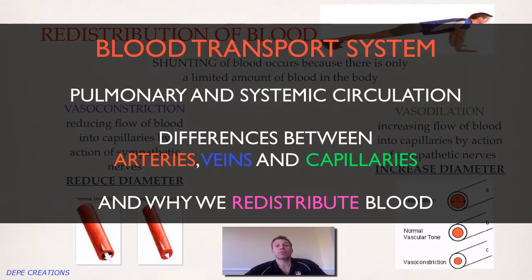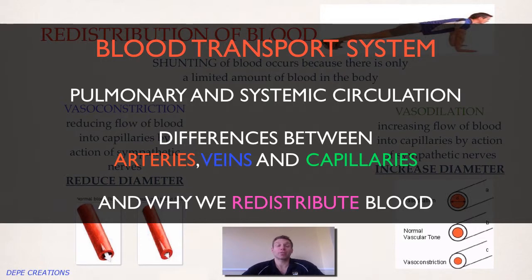So there we have it — the blood transport system. We've covered two circulations: pulmonary and systemic; why blood is transported around the body; the vessels we use; and why we need to redistribute blood during exercise.